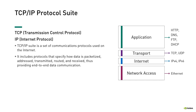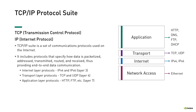The TCP/IP suite is a set of communications protocols used on the Internet. It includes protocols that specify how data is packetized, addressed, transmitted, routed, and received, thus providing end-to-end data communication. Shown here are some of the protocols in the suite, where each protocol is listed at the respective layer. Note that the TCP/IP model has four layers as opposed to the seven-layer OSI model. Layers of the different protocols should always be referenced to the OSI model. For example, the Internet layer protocols IPv4 and IPv6 are considered layer 3. Similarly, the transport layer protocols TCP and UDP are considered layer 4, and application layer protocols such as HTTP and FTP are referred to as layer 7. We'll cover some of these protocols in more detail in the following units.